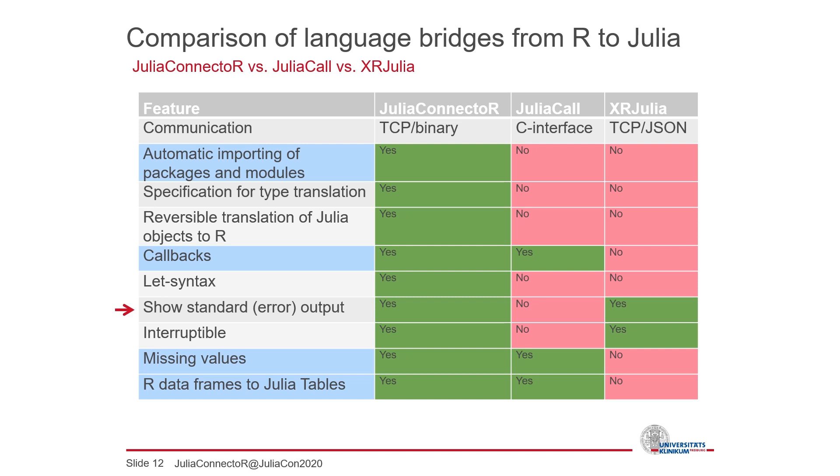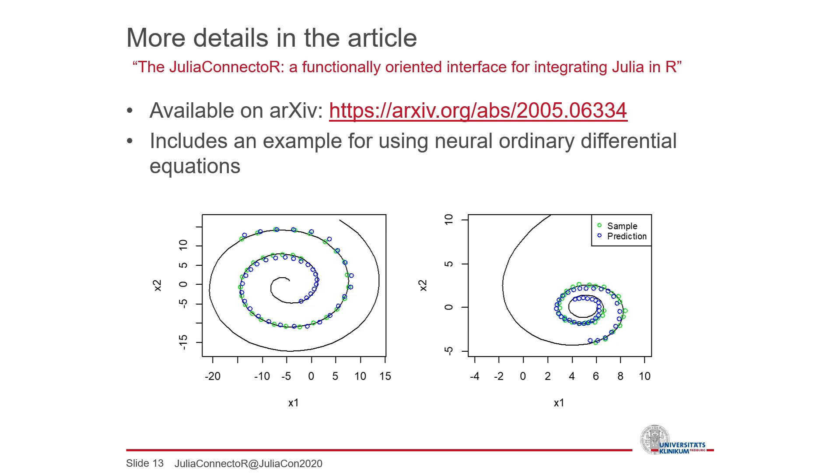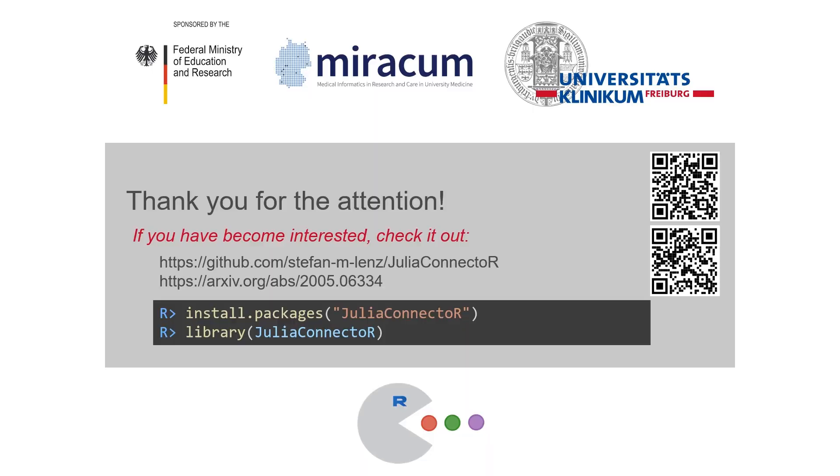Due to the lack of time, I can't go into the details of the other features here. You can find more details on the features of the JuliaConnector and on the comparison to JuliaCall and XRJulia in our article, which is available on arXiv now. It also includes an example for fitting neural ordinary differential equations on time series data.